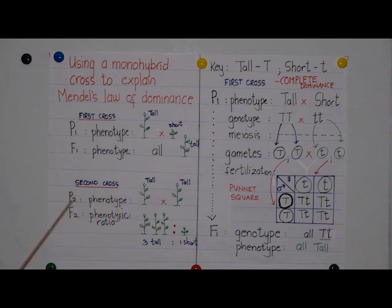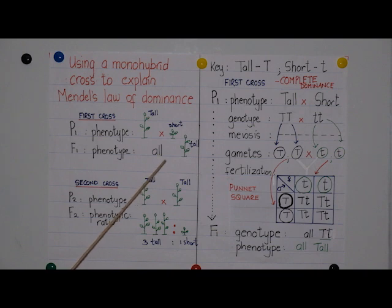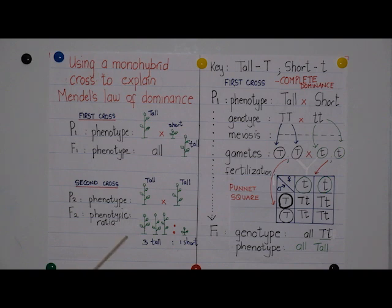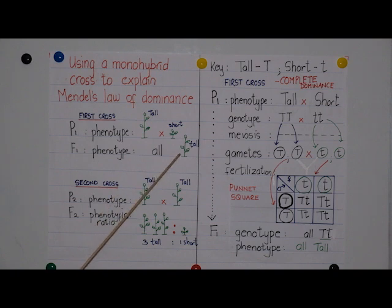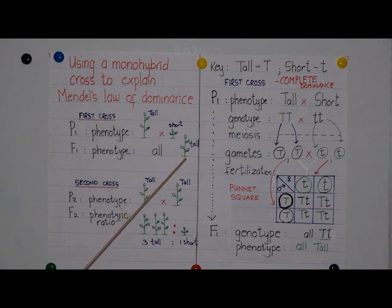For the second cross, Mendel took the F1 offspring and cross-pollinated them with each other. In other words, the F1 offspring became the P2, the second set of parents. Their offspring, the F2, were produced in the phenotypic ratio of three tall to one short, meaning for every three tall plants produced, one was short. Mendel realized that the characteristic which was hidden in the F1 now reappeared in the F2. He called the characteristic which appeared in the F1 the dominant characteristic, and the characteristic which was hidden in the F1 the recessive characteristic.